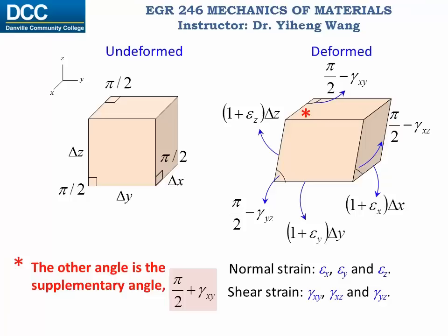Epsilon x, y, and z are the normal strains that describe the change in size along the x, y, and z directions respectively. Gamma xy, xz, and yz are shear strains, and they describe the angle changes within the xy plane, xz plane, and yz plane respectively.